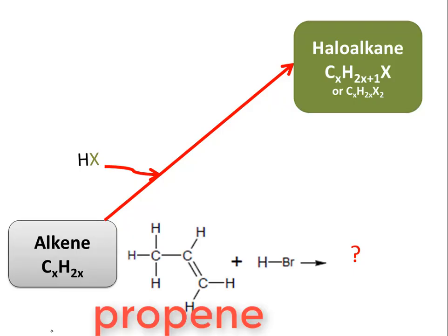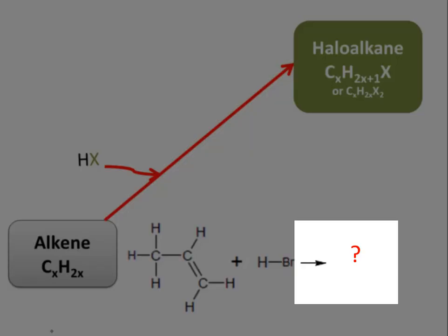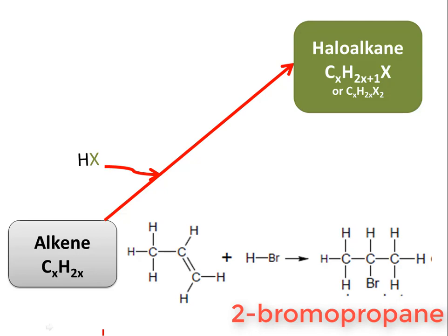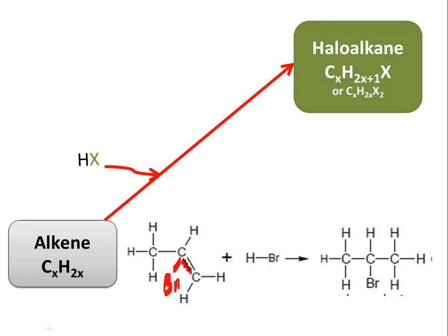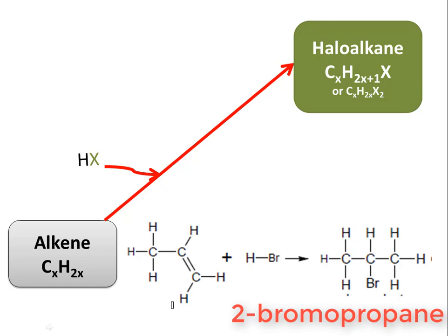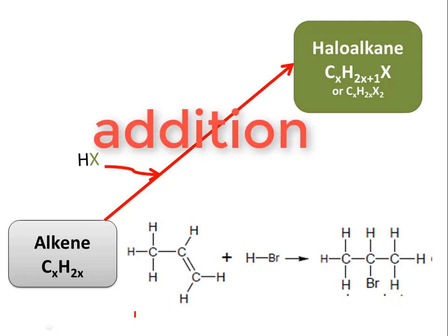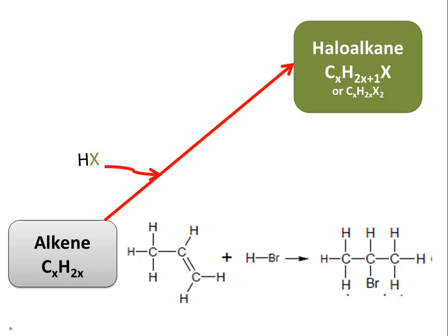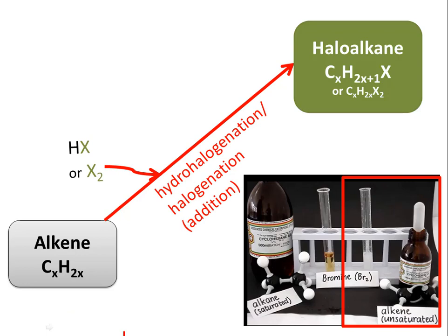Another example: propene reacting with hydrogen bromide gives 2-bromopropane as the major product. The major product has the halogen in a more central position — the bromine attaches to the central carbon rather than the edge carbon. This is also an addition reaction, called hydrohalogenation in the case of HX, or halogenation in the case of X₂.